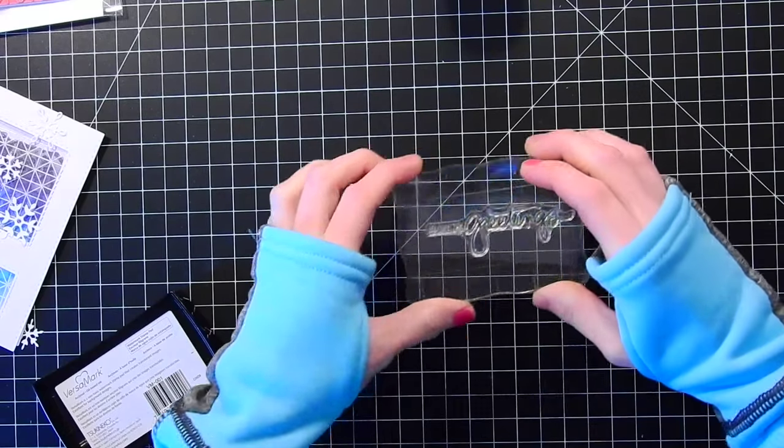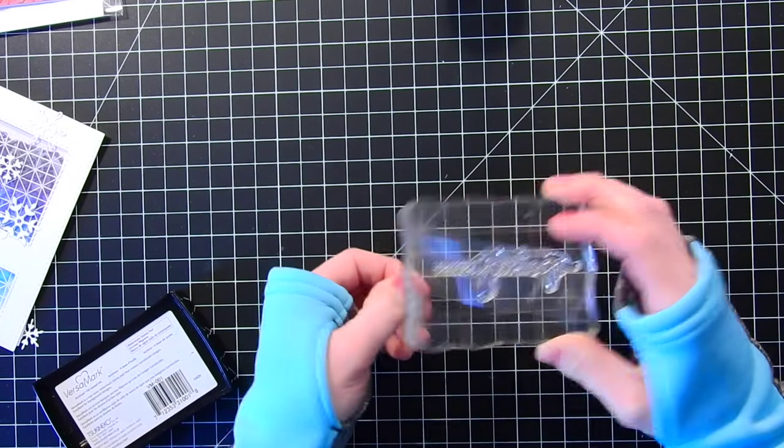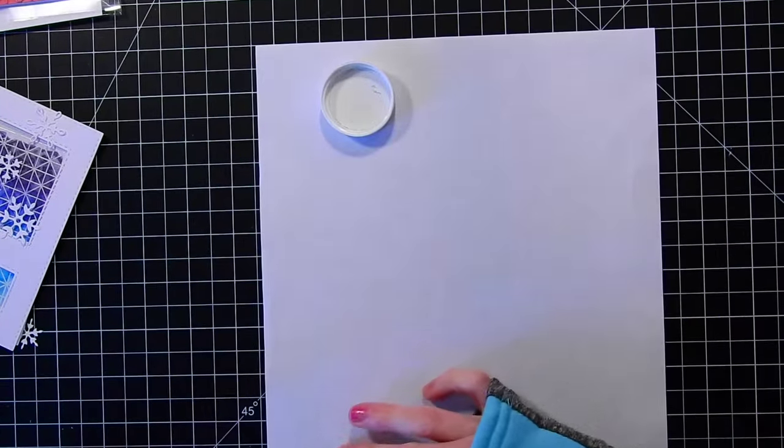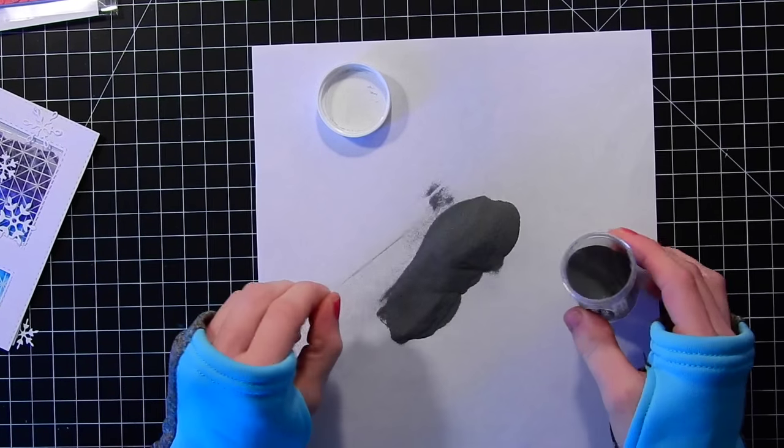And then I'm going to take some silver embossing powder. And I'm going to sprinkle this over top of the stamped sentiment. And then I'll go ahead and heat set that.